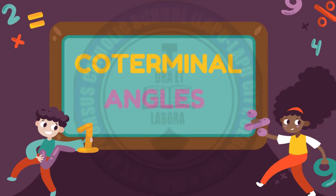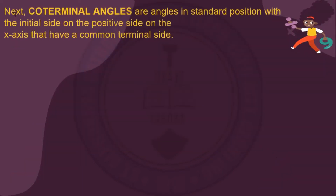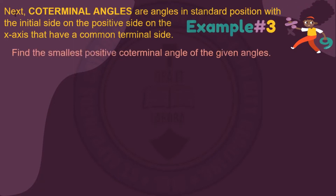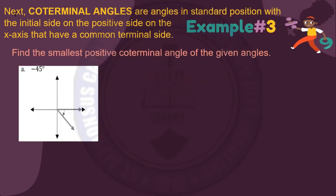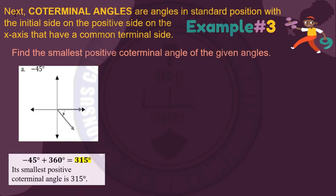Next are the coterminal angles. Coterminal angles are angles in standard position, with the initial side on the positive side of the x-axis, that have a common terminal side with a given angle. To find the smallest positive coterminal angle of negative 45 degrees, we compute: negative 45 degrees plus 360 degrees equals 315 degrees. So the smallest positive coterminal angle is 315 degrees.